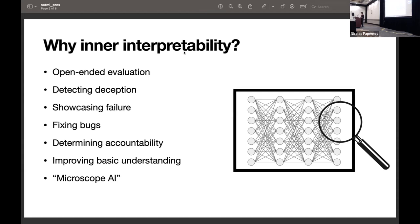As a solution, what we really want is a toolbox of more open-ended tools that are going to help us understand, interpret, evaluate models so that we can exercise human oversight. We have this notion of trying to interpret models better via human understanding. The advantages to this include open-ended evaluation, detecting deception, cases in which your model may not be doing what you think it's doing, showcasing failure, fixing bugs, determining accountability, improving basic understanding, and also this relatively new term in the literature known as microscope AI, which refers to this notion of understanding a model well enough to potentially even gain domain insights on the task that it's solving. For example, maybe we could interpret AlphaGo really well and become better chess players as a result of it.